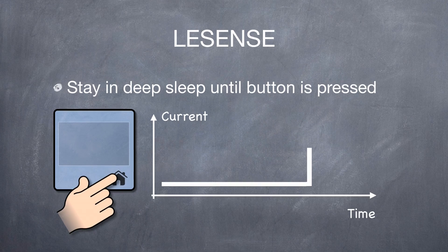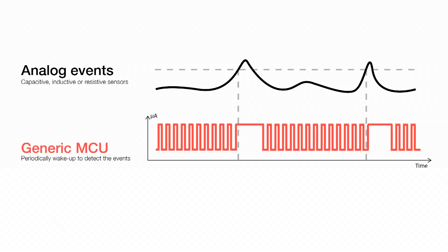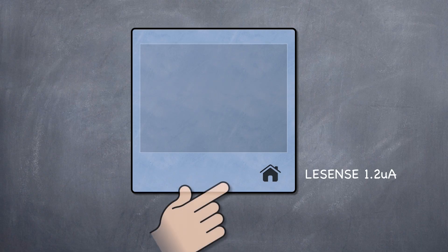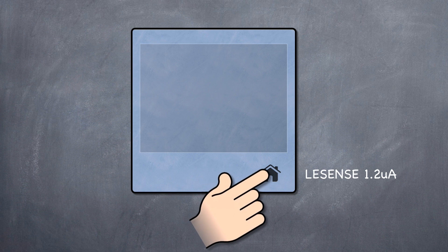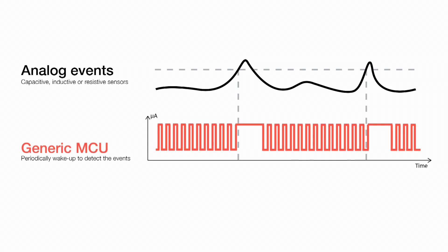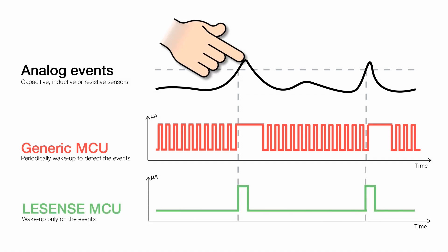The low energy sensor interface is used to monitor the capacitive touch button. With a regular microcontroller, the processor needs to wake up periodically to find out if someone has touched the button. LeSense typically consumes 1.2 microamps for this type of capacitive touch sensor. Monitoring the button is an autonomous process, and thus the interface runs without the processor being active at all.